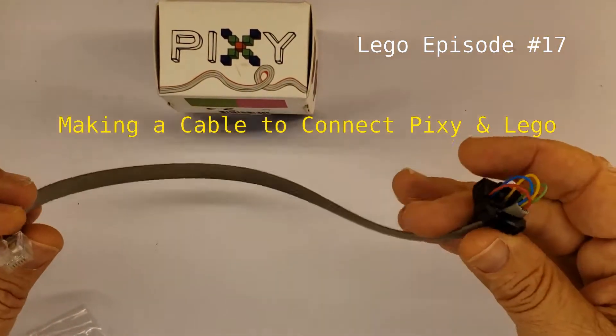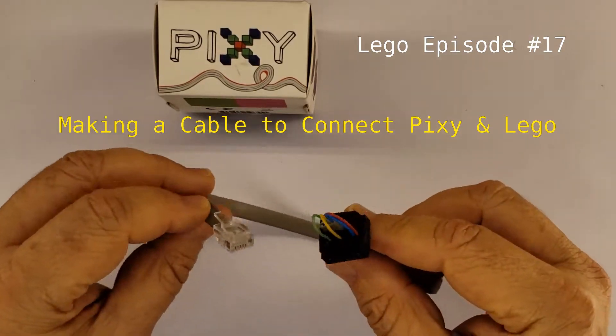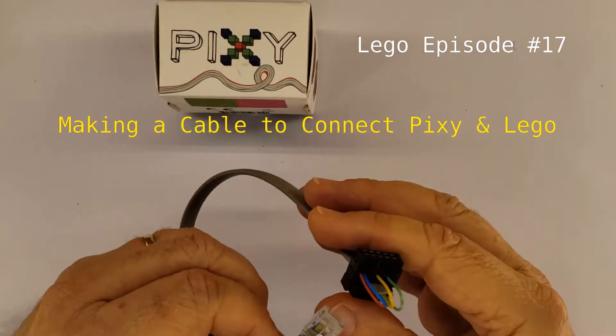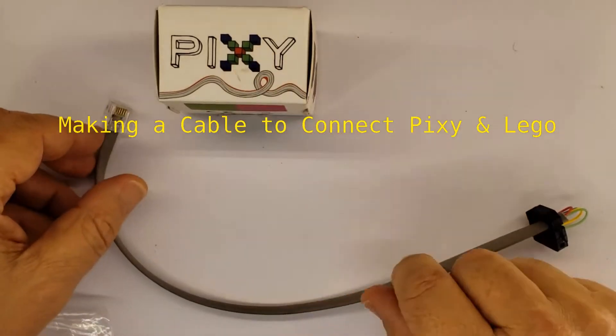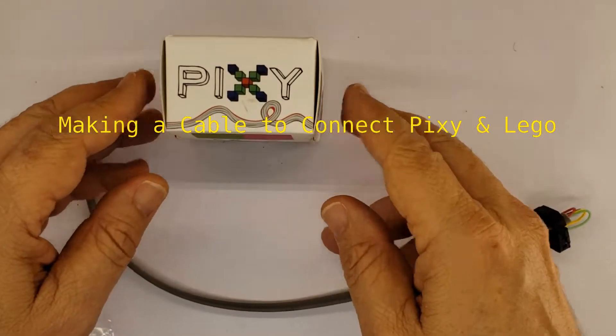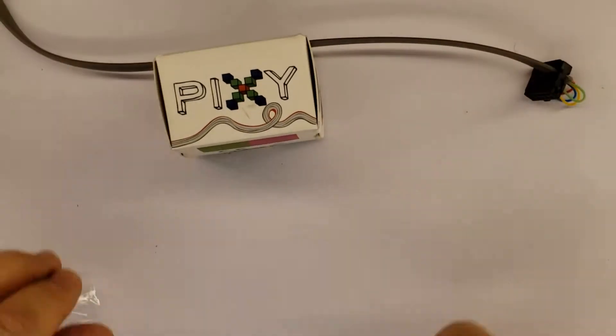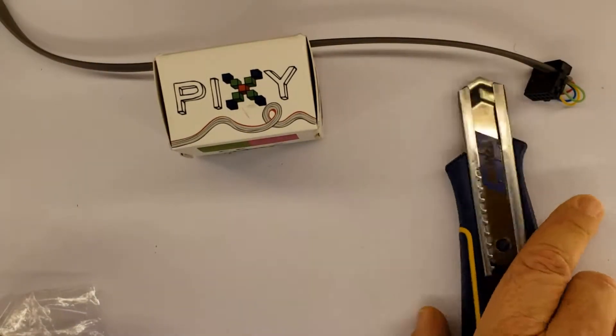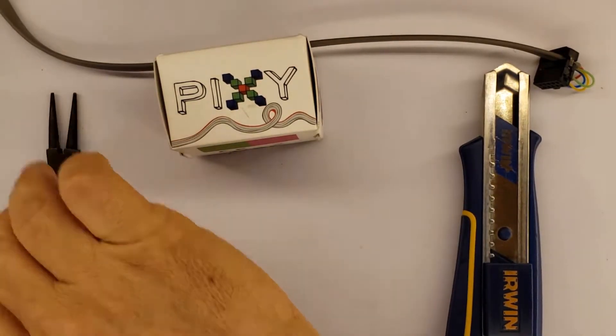Hi, in this Lego episode I will explain to you how to build this cable to connect Lego to this Pixie camera. Let's begin. First, the material you will need: you will need a knife, a cutter, and pliers.